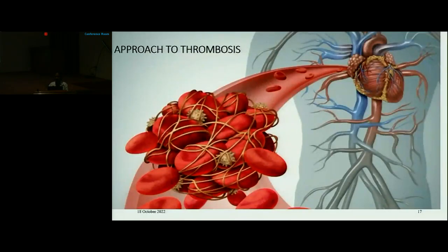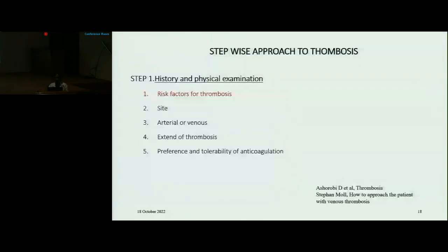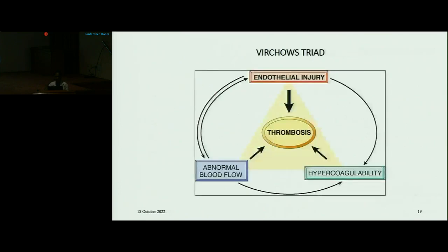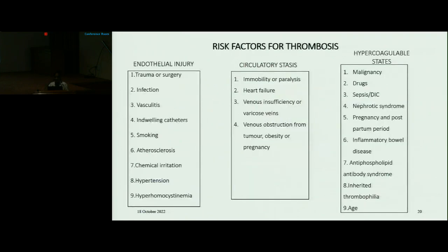Coming to the approach to thrombosis: whenever we approach a case of thrombosis we should follow a stepwise manner. The first step is history and physical examination, during which we get information about the site, whether it is arterial or venous, the extent of thrombosis, and the preference and tolerability of anticoagulation. Most importantly, we assess the risk factors for thrombosis. Risk factors can be explained in terms of Virchow's triad: endothelial injury, circulatory stasis, and hypercoagulable state. Arterial thrombosis is mainly caused by endothelial injury, whereas venous thrombosis is mainly caused by circulatory stasis and hypercoagulable states.